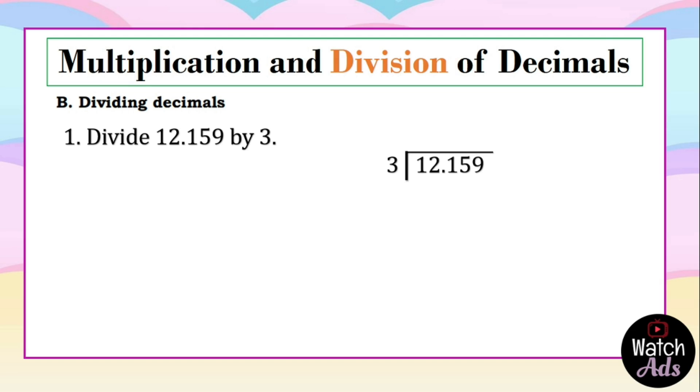Let's have an example. Divide 12.159 by 3. Just place it in the division bar and perform division. 12 divided by 3 is 4. 4 multiplied by 3 is 12. 12 less 12 is equal to 0. We bring down 1. 1 divided by 3 cannot be, so we write 0. 0 multiplied by 3 is 0. 1 less 0 is 1. Bring down 5.